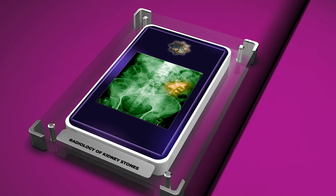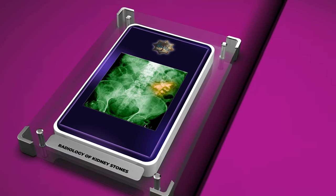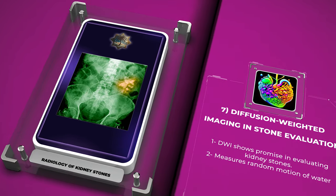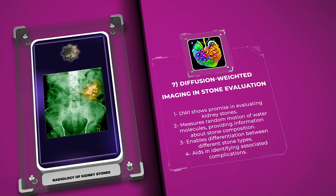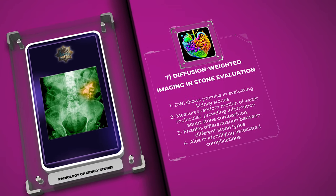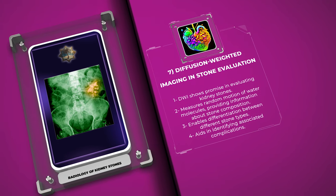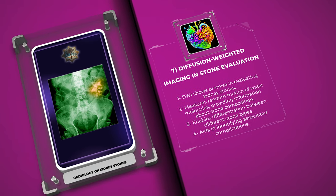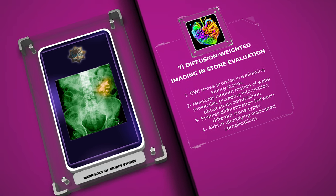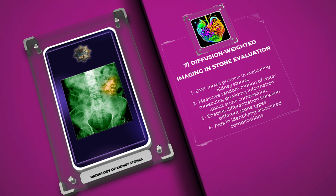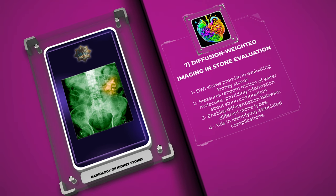Diffusion-weighted imaging (DWI) is an MRI technique that has shown promise in the evaluation of kidney stones. By measuring the random motion of water molecules, DWI provides valuable information about the cellular architecture and composition of stones. This technique enables differentiation between different stone types, such as cysteine and calcium oxalate, which have distinct diffusion patterns. Moreover, DWI can aid in identifying associated complications, such as obstruction or infection, contributing to a comprehensive assessment of kidney stone disease.